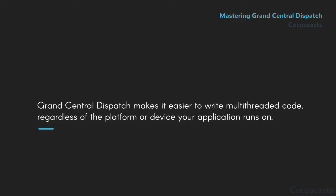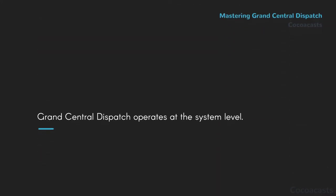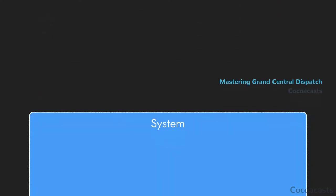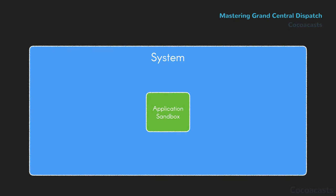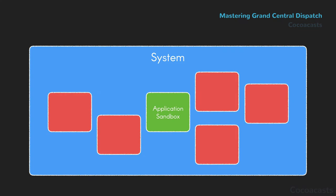Grand Central Dispatch is a technology designed to make the execution of tasks on multi-core hardware performant and straightforward. It can do this because it operates at the system level. Your application operates in a sandbox, which means it is unaware of other processes running on the system at the same time. Because Grand Central Dispatch operates at the system level, it has an accurate view of the processes that are running and the resources that are available. By leveraging Grand Central Dispatch, your application doesn't need to know about the platform or device it runs on, and it doesn't need to take other processes competing for the same resources into account.